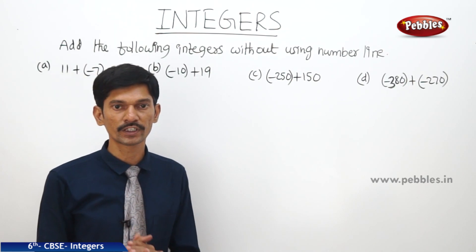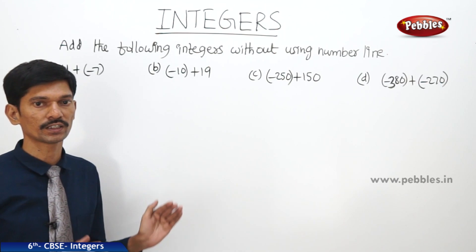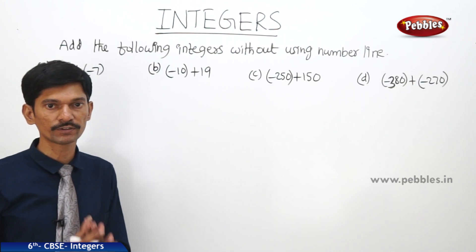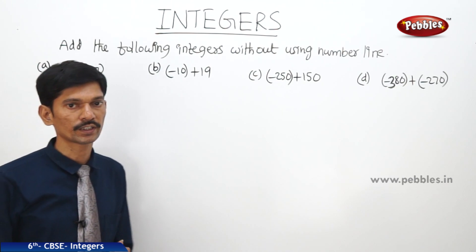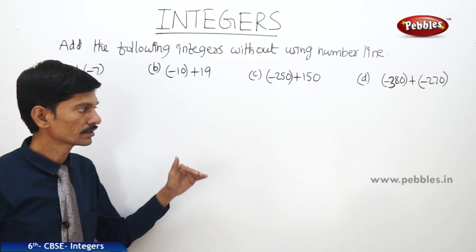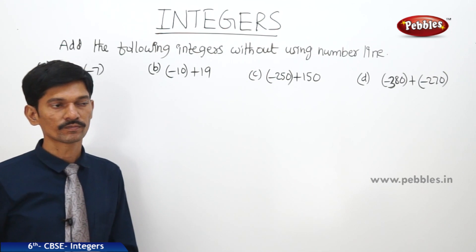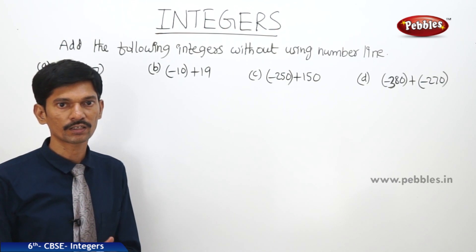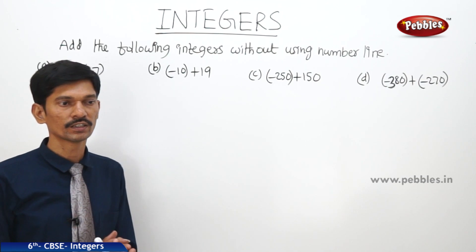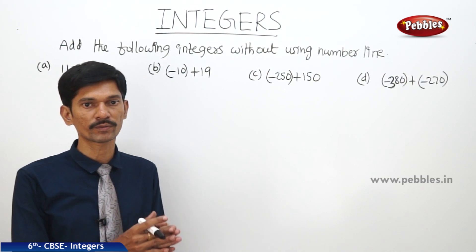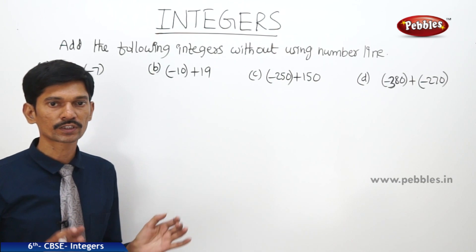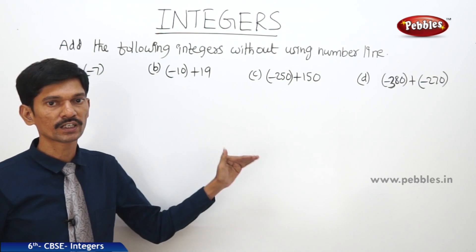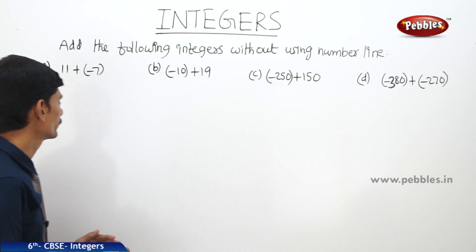While adding two positive integers, we add them as we add whole numbers or natural numbers. When we add two negative integers, we add them as whole numbers and the result takes the negative sign. When we add a positive integer and a negative integer, we subtract the smaller number from the bigger number without considering its sign.